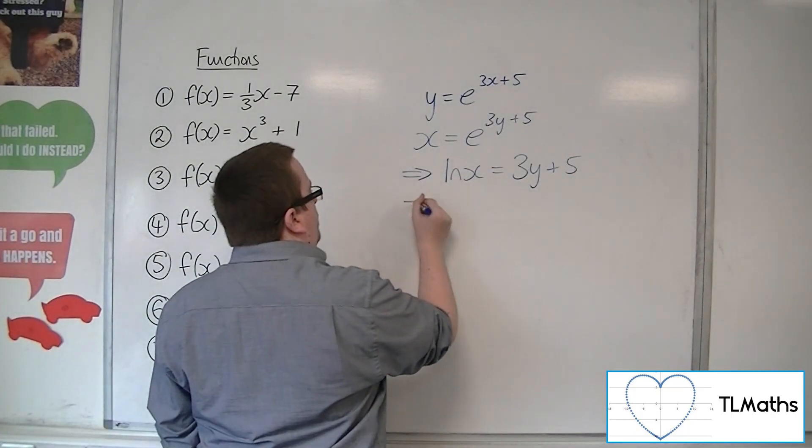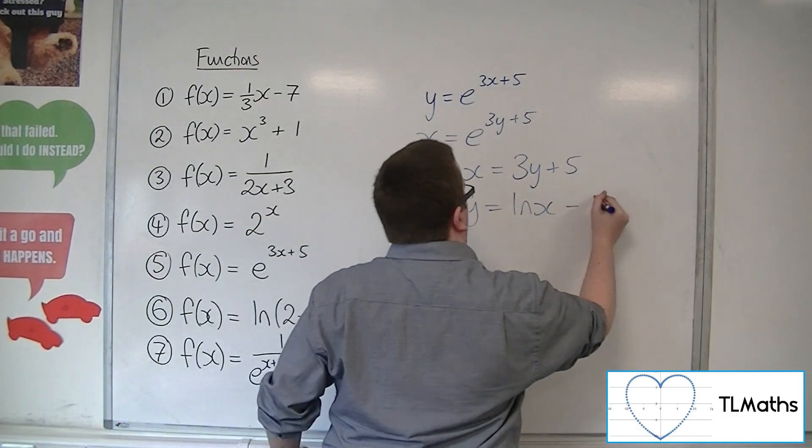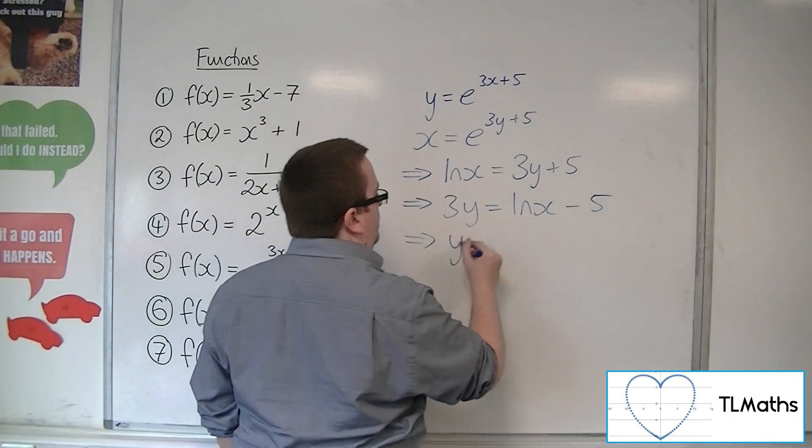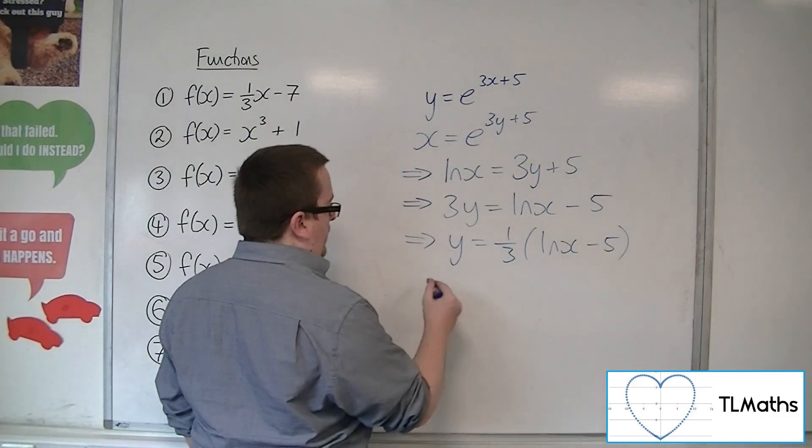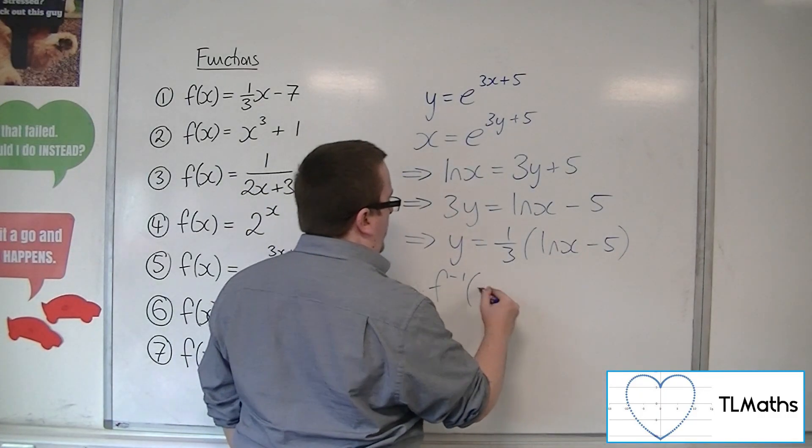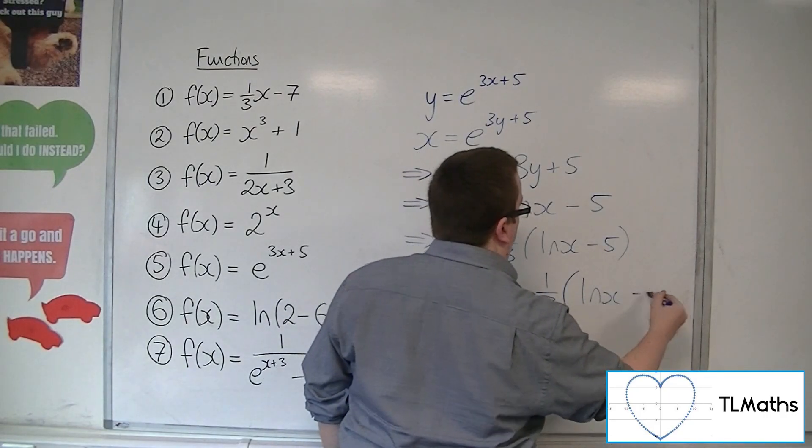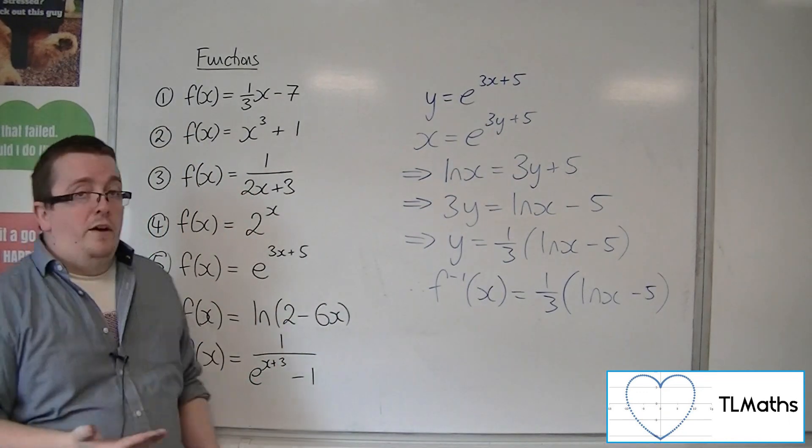So then subtract 5 from both sides, and then divide both sides by 3. So that means that the inverse function of x is 1/3(ln(x)) - 5. So that's number 5.